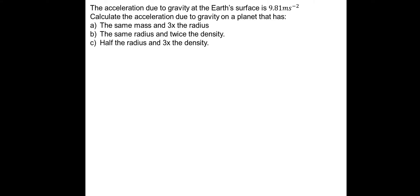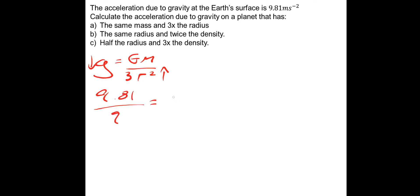The acceleration due to gravity at Earth's surface is 9.81 metres per second squared. Calculate it for a planet with the same mass and 3 times the radius. Using g equals GM over r squared — same mass, 3 times the radius: 3 squared is 9, so the gravitational field strength is 9 times less. That's 9.81 divided by 9, which is 1.09 metres per second squared.